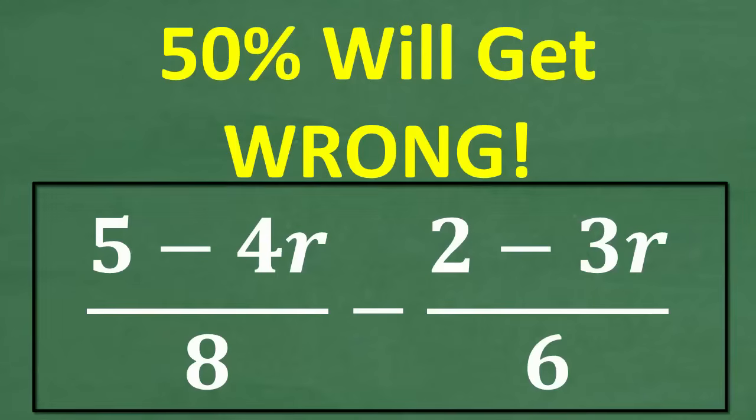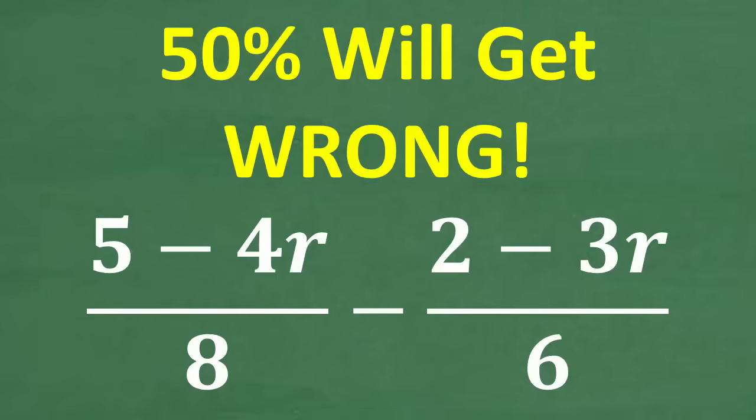The problem is 5 minus 4R over 8, minus 2 minus 3R over 6. We want to subtract these two expressions. If you can do this, go ahead and put your answer in the comment section, and then we're going to thoroughly go through this problem. I'm going to highlight the places where students make common errors, and I'm going to show you two ways to do this problem.